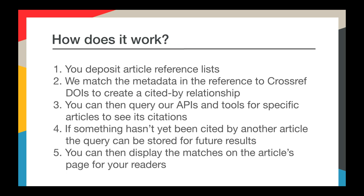How does it actually work? The steps are pretty straightforward. You deposit article reference lists. We match the metadata in the reference to Crossref DOIs to create a Cited by relationship. You can then query our APIs and tools for specific articles to see its citations. If something hasn't yet been cited, the query can be stored for future results, so you can keep checking because Cited by matches can happen at any time. You can then display the matches on the article page for your readers.